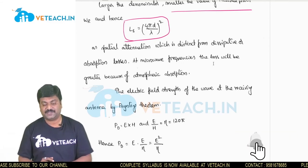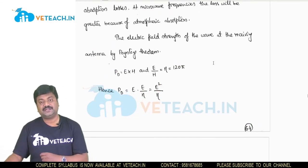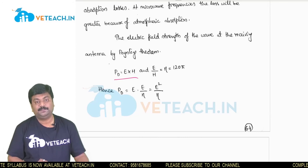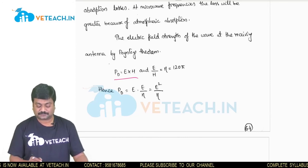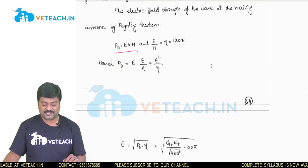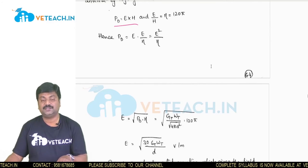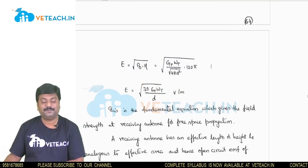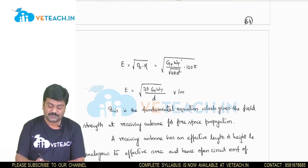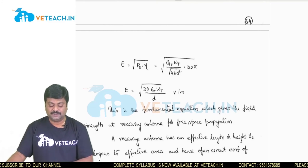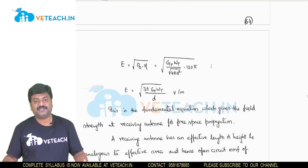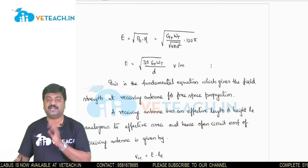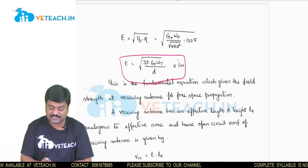The electric field strength at the receiving antenna is found using Poynting's theorem from the first unit: Pd = E × H, or E/H = η = 120π. Hence Pd = E²/η, and E = √(Pd × η). Substituting the values of Pd and η, we get the electric field strength as E = √(30 × Gt × Wt) / d. This is the fundamental equation giving the field strength at the receiving antenna.